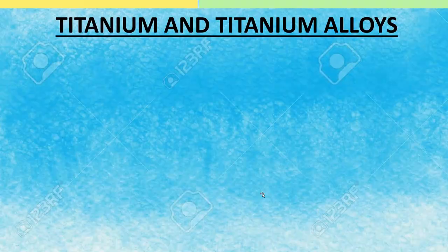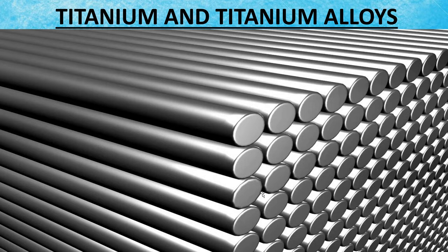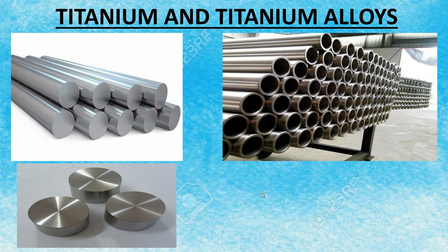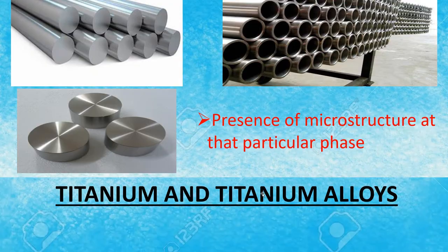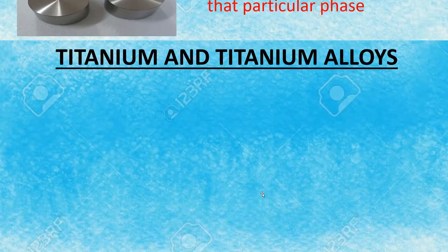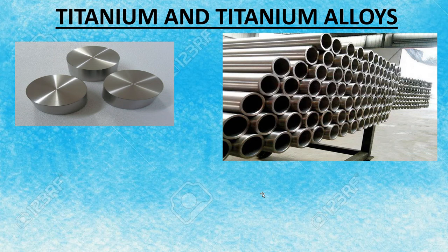Many alloys of titanium are available commercially based on their multiple requirements. The alloys of titanium are of three metallurgical types: alpha, alpha-beta, and beta. These three names are derived based on the presence of microstructure at that particular phase.